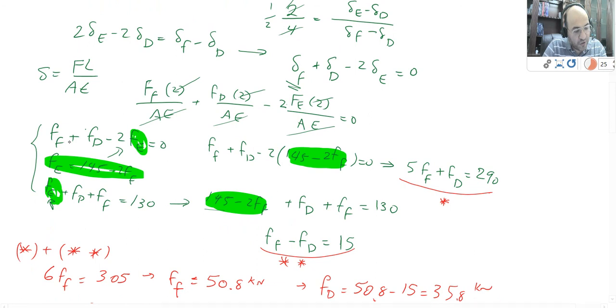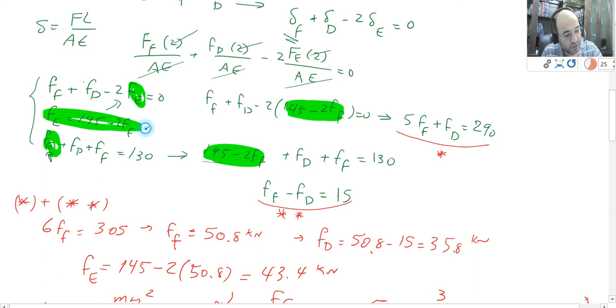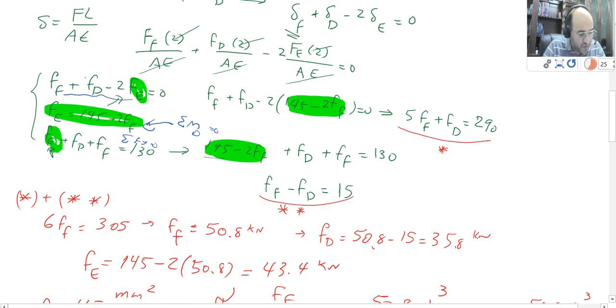That's my third equation, which I wrote it here. I have two more equations, one equation from sum of moment, and one equation from sum of Fy. This equation is coming from sum of moment, this equation is coming from sum of Fy equal to 0, and that equation is coming from the geometry related to the object—applying all those delta FL over AE, we simplify it.